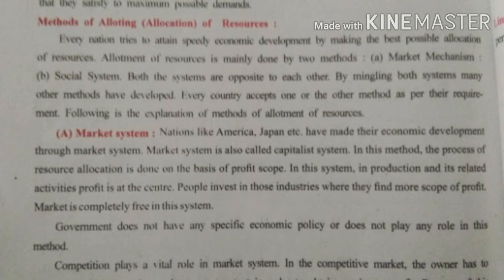The owner has to increase working capacity to the greatest extent in order to get maximum profit. He has to show creativity, do research, development, and make new discoveries. Because of this, new research is done and new methods of production are created, so production is maximum. Competition controls the whole market like an invisible hand. Government does not interfere, which is why this economy is called a free economy.